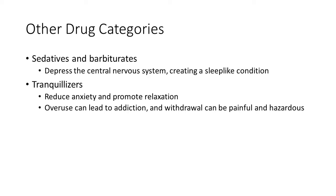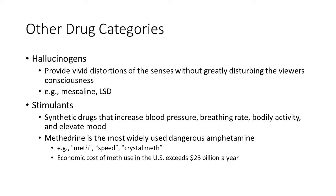Sedatives and barbiturates — street name 'downers,' sometimes identified by their colors, blue and red — depress the central nervous system, creating a sleep-like condition. Barbiturates are a major cause of drug overdose deaths. Tranquilizers reduce anxiety and promote relaxation; overuse can lead to addiction and withdrawal can be painful and hazardous. Hallucinogens are another type of drug — they can be natural or synthetic — and provide vivid distortions of the senses without greatly disturbing the user's consciousness. LSD is a common synthetic example.